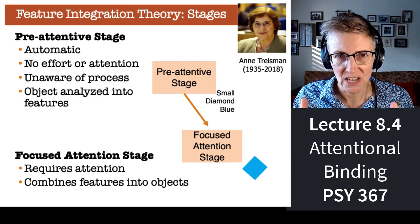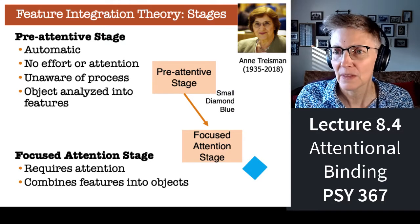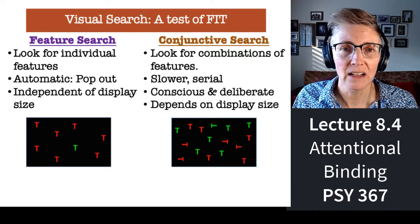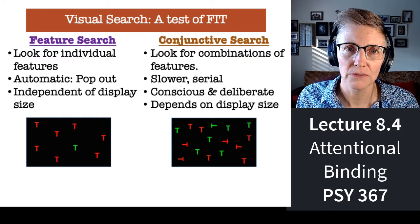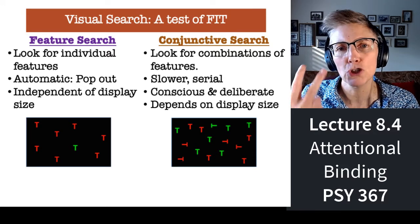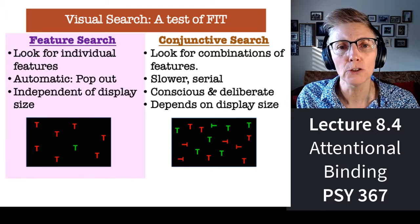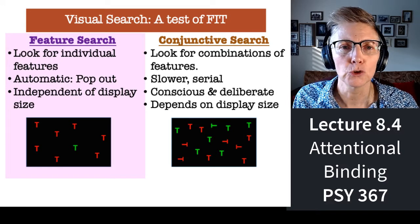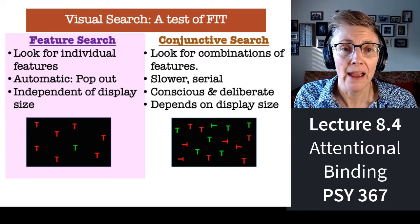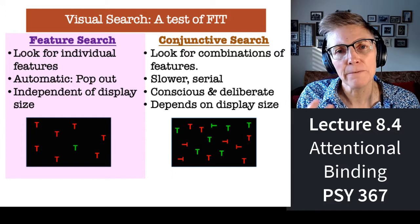But the subsequent stage is what combines the features into objects. Anne developed these visual search tasks that have been classics in the field of attention and cognitive psychology for decades. What Anne would do is create two visual search situations. In one of them, you just had to look for a feature. To find a green T in the display on the bottom left, all you have to do is look for green — and in fact the green thing jumps right off the screen. She called these feature searches.